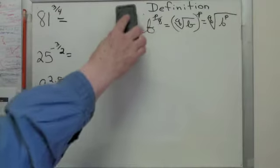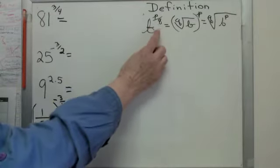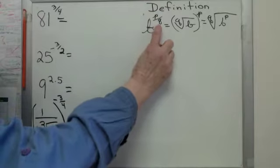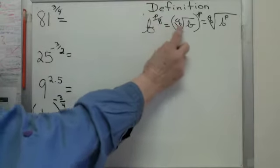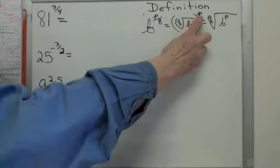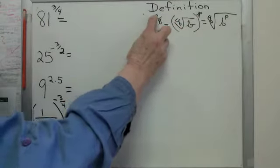We have a new exponent rule in this chapter. b to the p over q can be rewritten as the qth root, so the bottom of the fraction on the fractional exponent becomes the root. So it becomes the qth root of b to the exponent p. So that p still stays there.